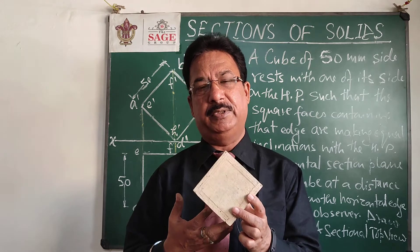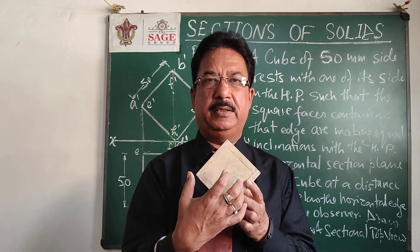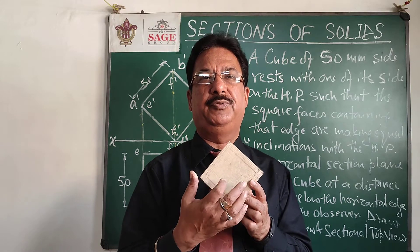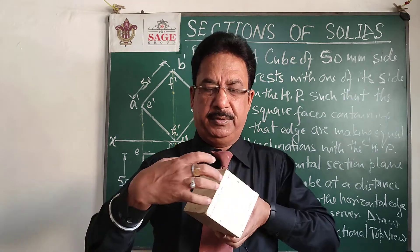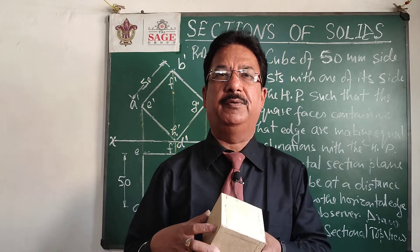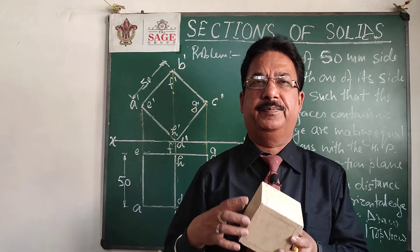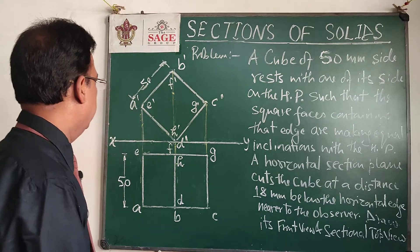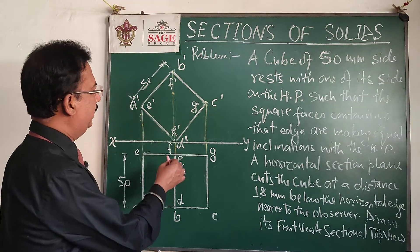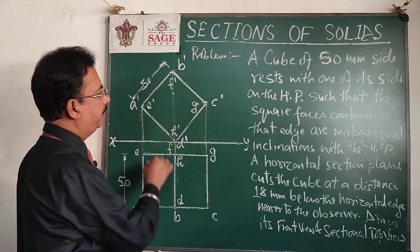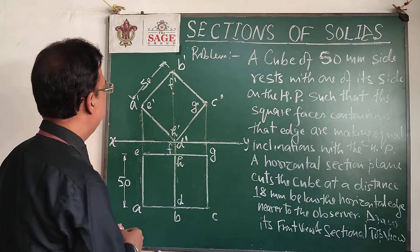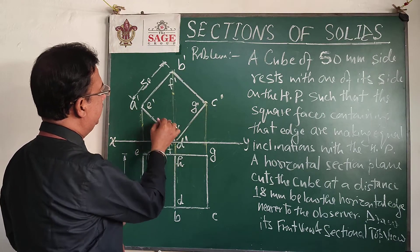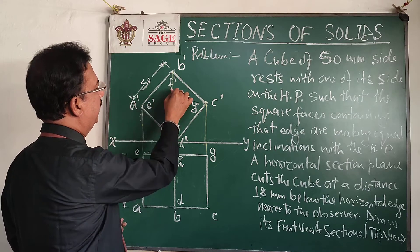Since this side is kept on the HP, if you look at the front view, the front view will show the real shape of this base. So we should start with the front view, and then with the help of that we can draw the top view, which will be a rectangle. I will start with this concept, draw the XY line, and then draw the front view of the cube. The naming should be a' b' c' d', and the back side face will be e' f' g'.